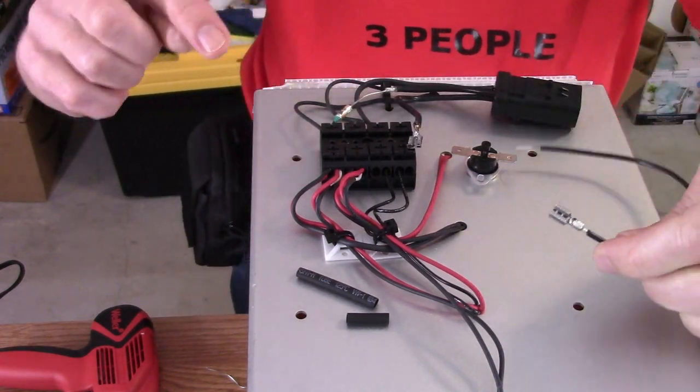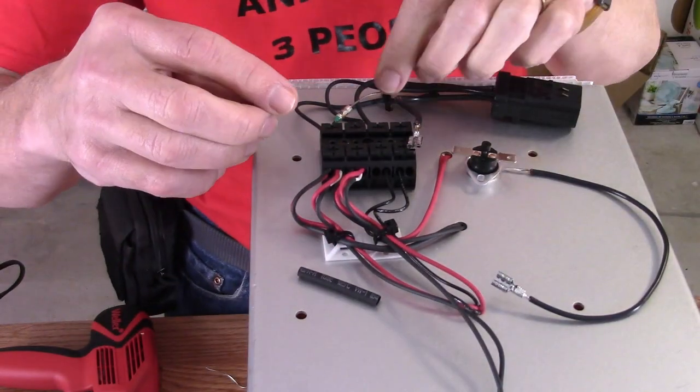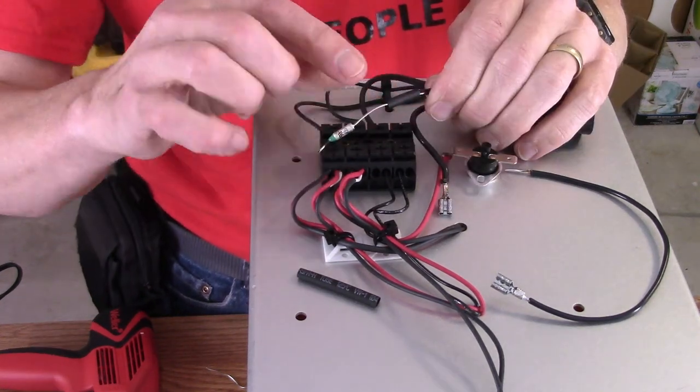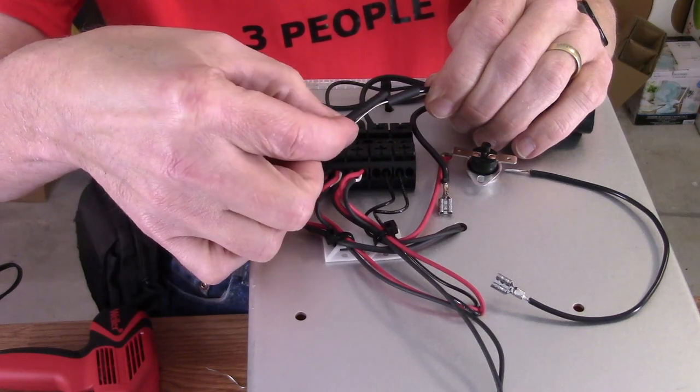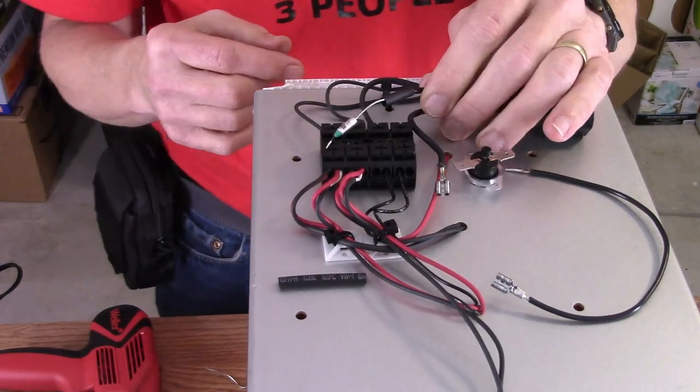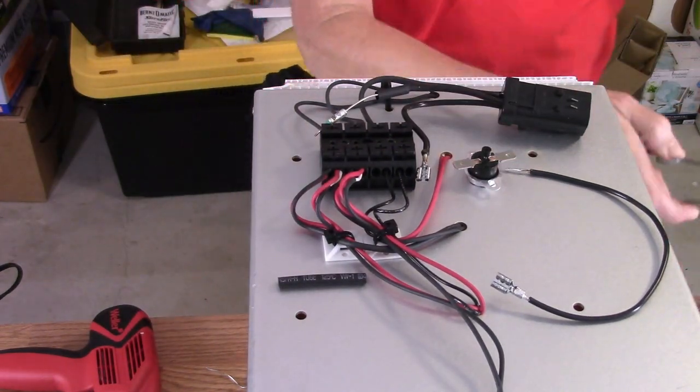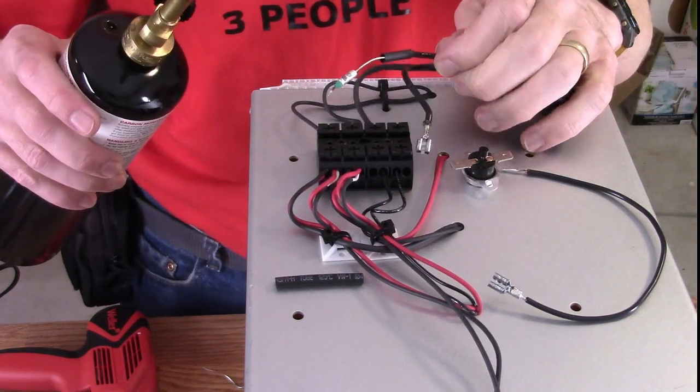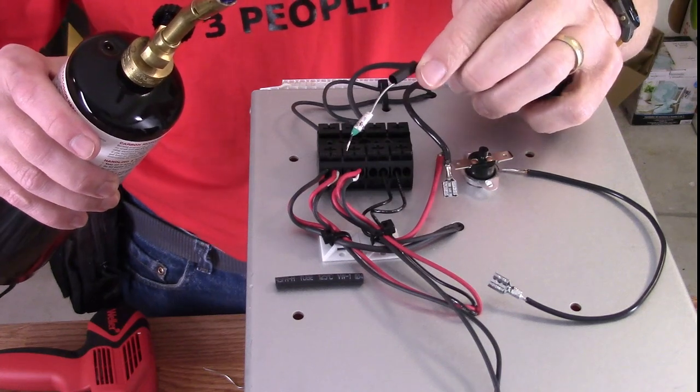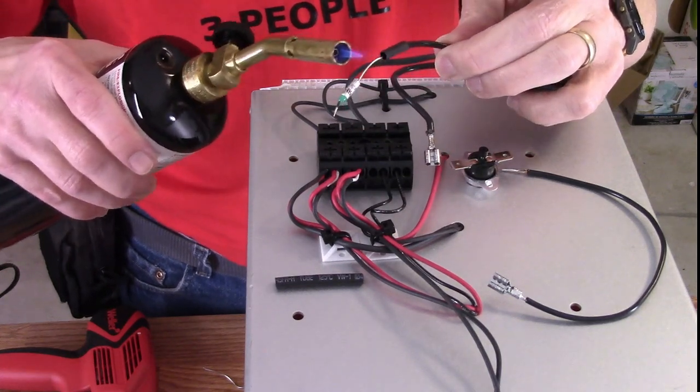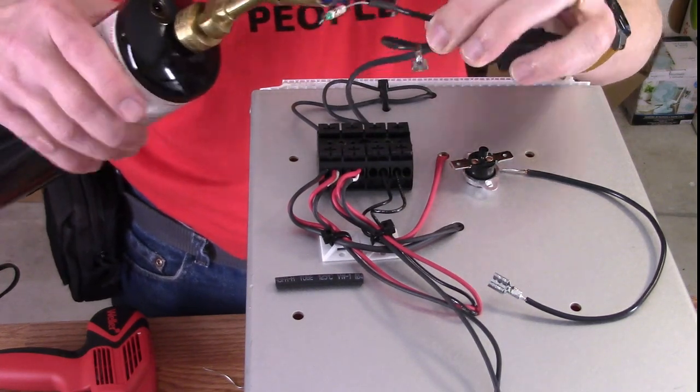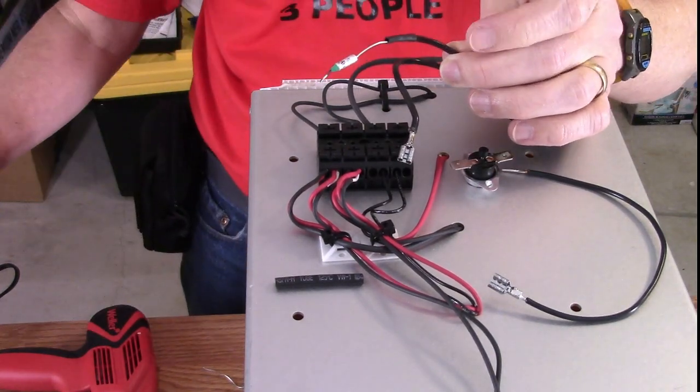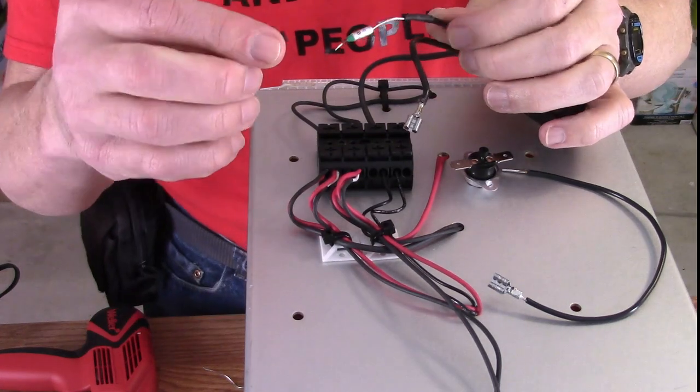Now I'm going to go ahead and put some heat shrink tubing on this area. This will cover the rest of that. I'll get those shrunk down. This would be a perfect job for a little lighter, which I don't have down here, so I'll just go ahead and shrink that one down.